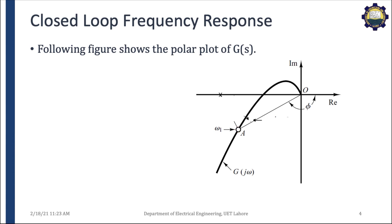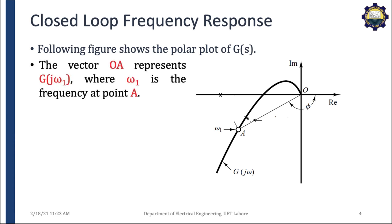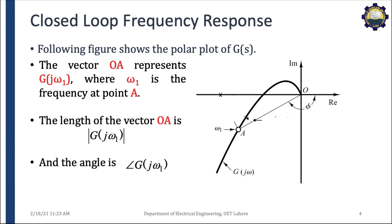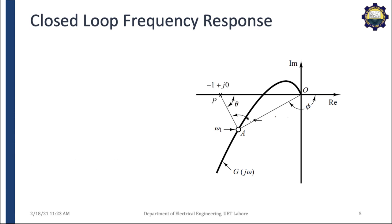At frequency omega-1, at point A, you are evaluating your transfer function G(s), so its magnitude will be equal to OA — that is the length of this vector — and the phase of your transfer function will be equal to phi. So you can evaluate the transfer function at any particular frequency. Now let us talk about the critical point, the minus-1 plus 0j point. We have discussed the importance of this point in previous videos and how it plays an important role in determining the stability of the system. The magnitude of the vector from the origin O to this critical point P will be equal to 1.